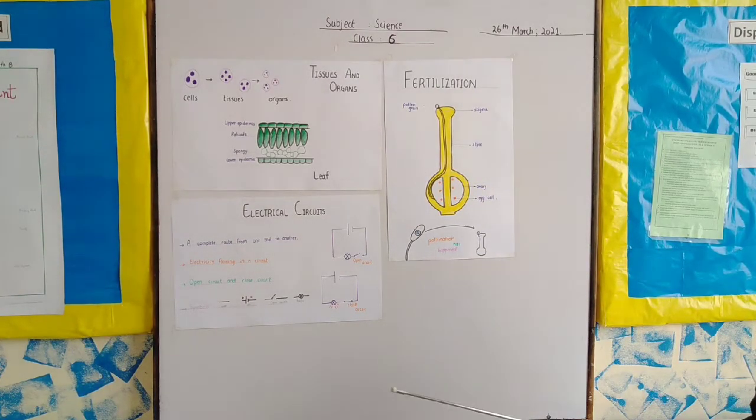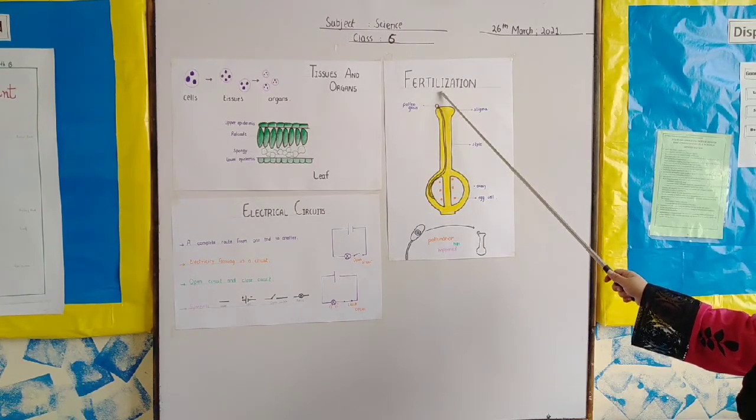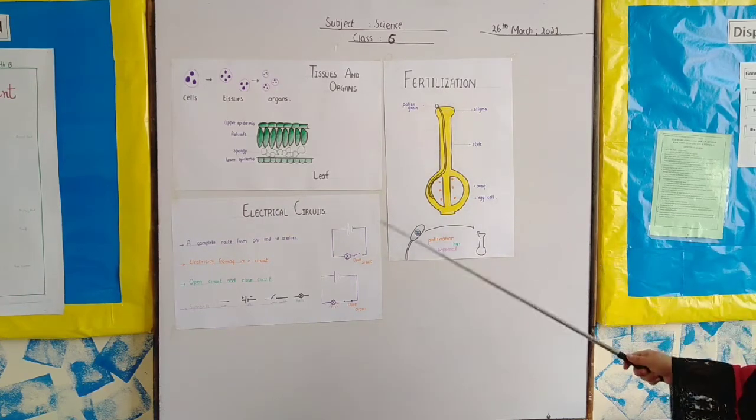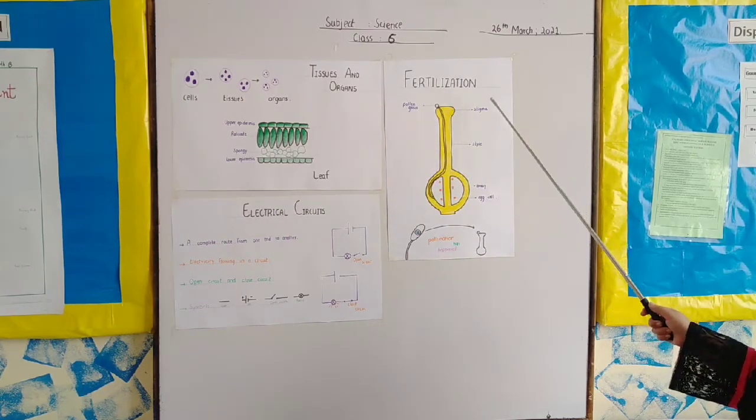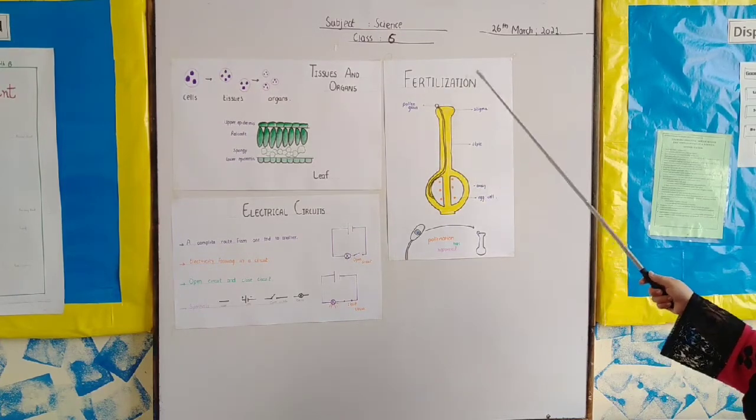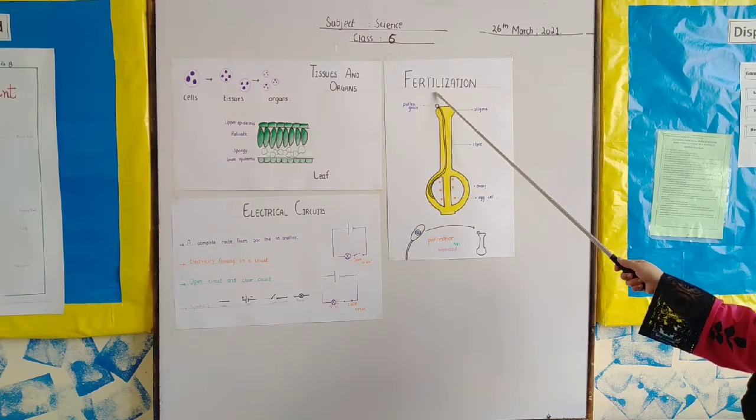After tissues and organs, we are having a topic which is very interesting which is fertilization. In fertilization, what does this mean? Fertilization means that the fusion of the male cell and the egg cell to form an embryo and a seed. This process is called fertilization.